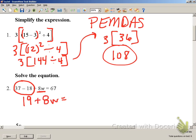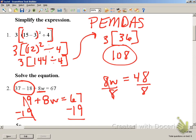Bring down the rest of the problem. We have to subtract 19 from both sides. So we have 8W is equal to 48. Divide by 8. W is equal to 6.